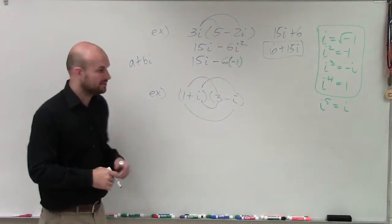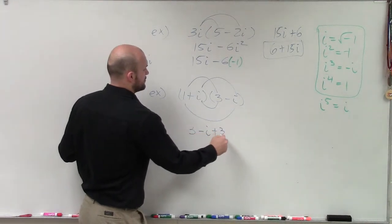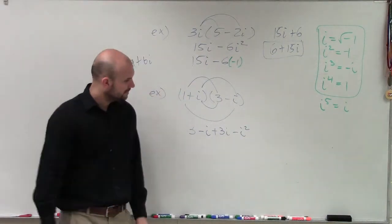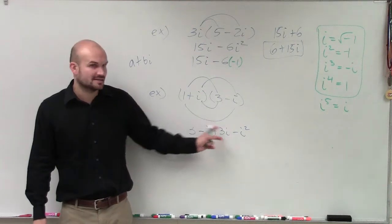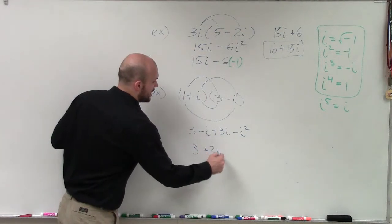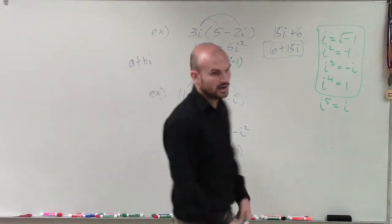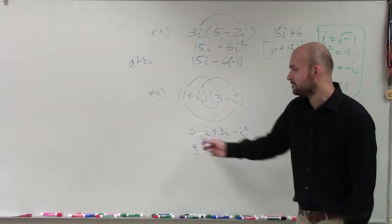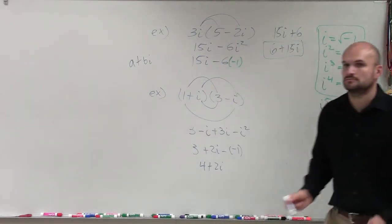For the second problem, using FOIL gives 3 minus i plus 3i minus i squared. We can combine the i terms — negative i plus 3i gives positive 2i — so we have 3 plus 2i minus i squared. Since i squared equals negative 1, minus negative 1 is positive 1. Positive 1 plus 3 is 4. So the answer is 4 plus 2i.